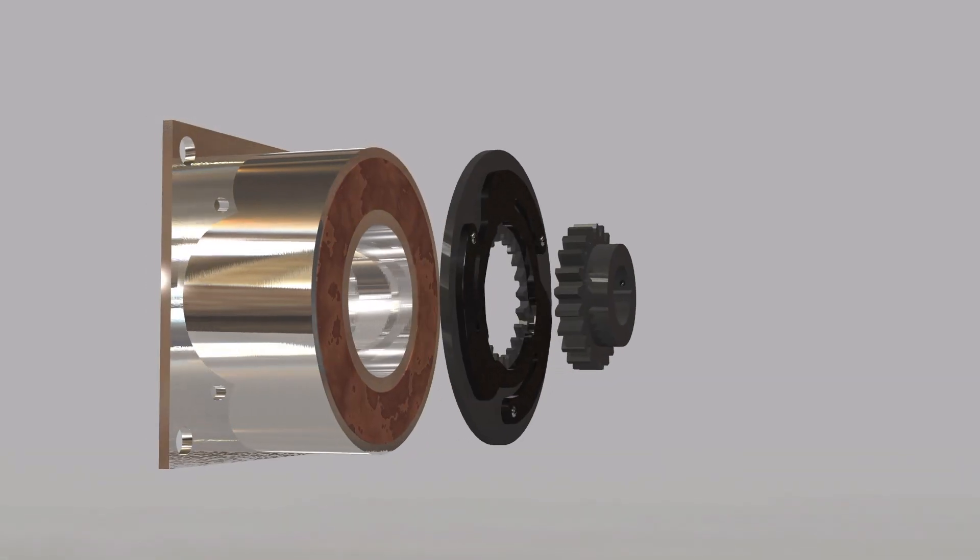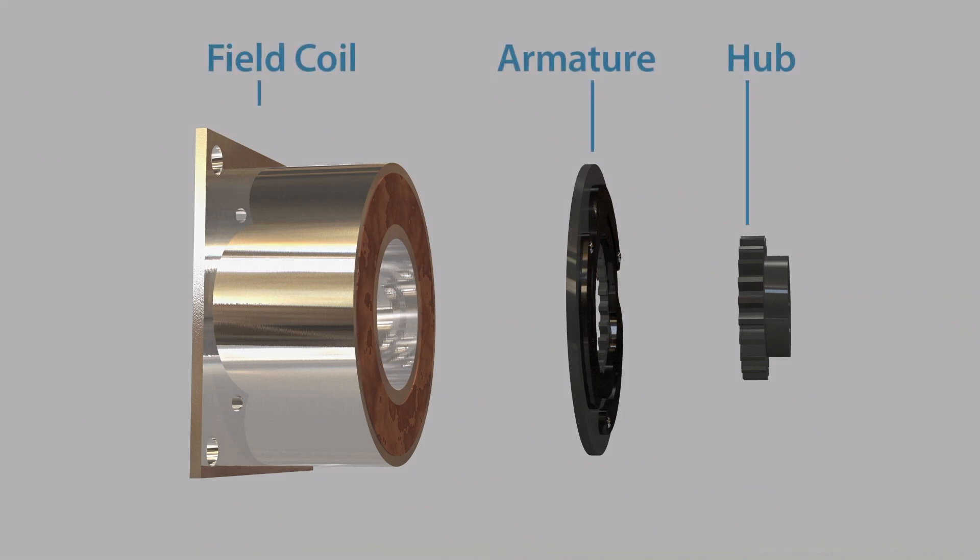The key components of the brake are field coil, armature, and hub.